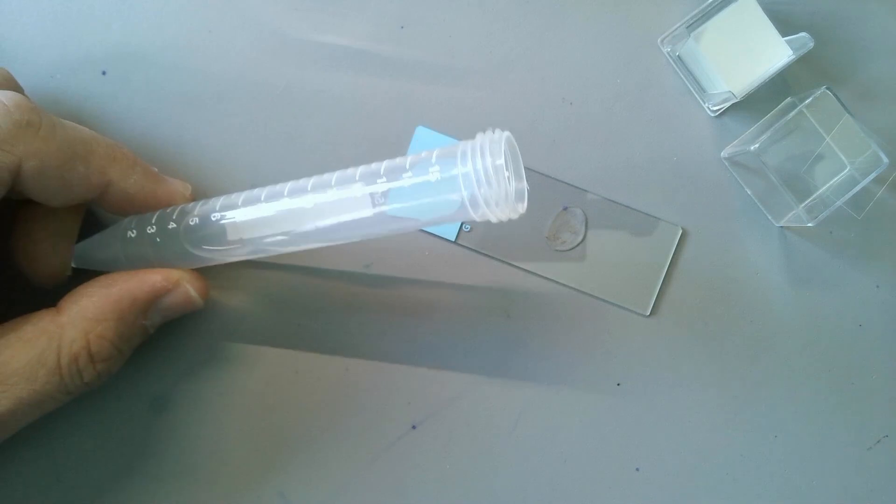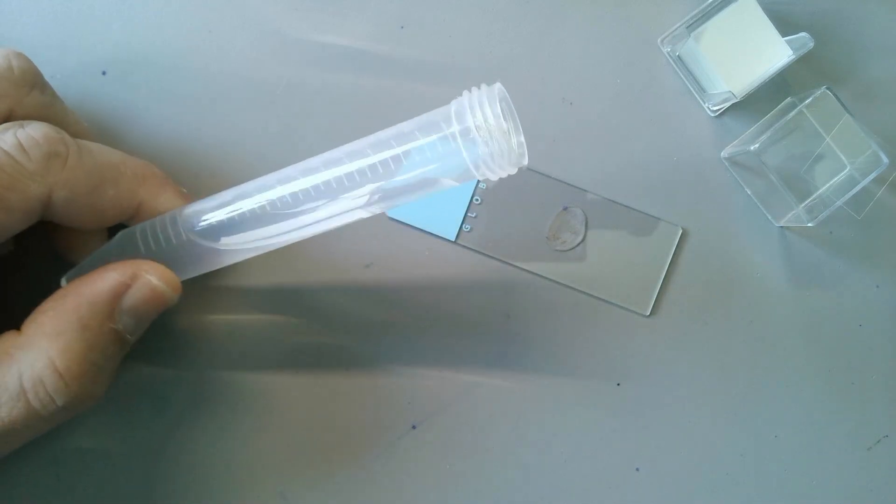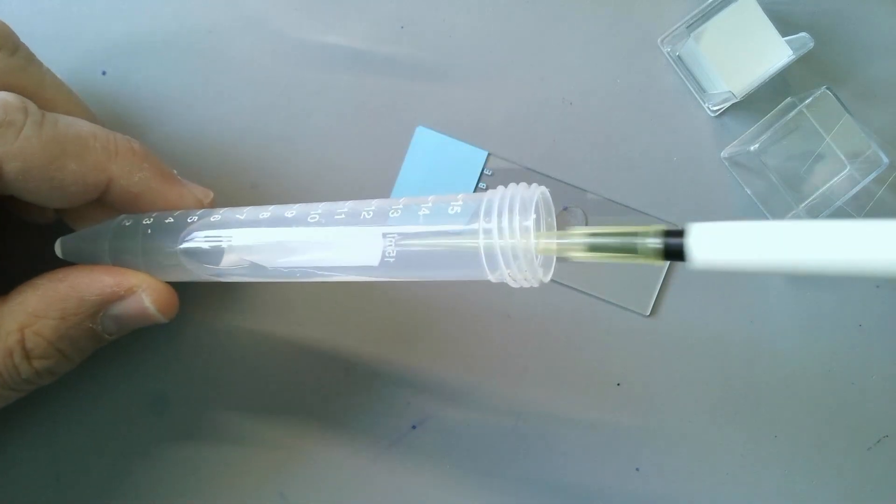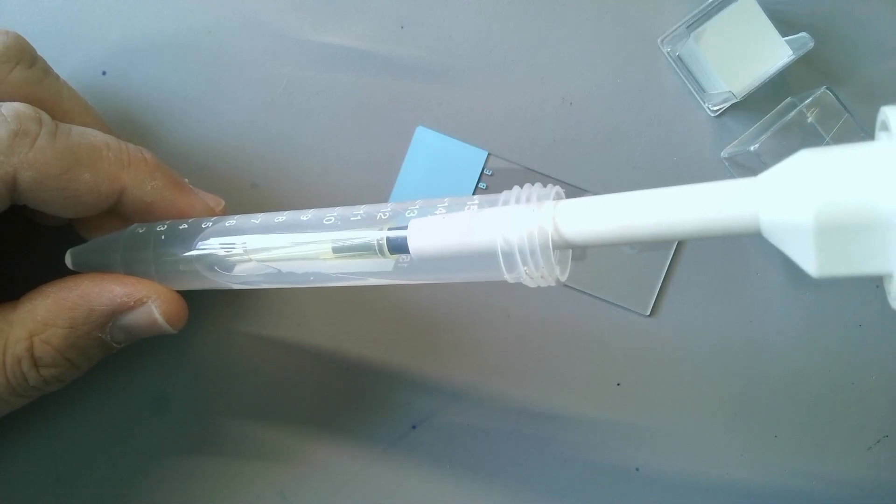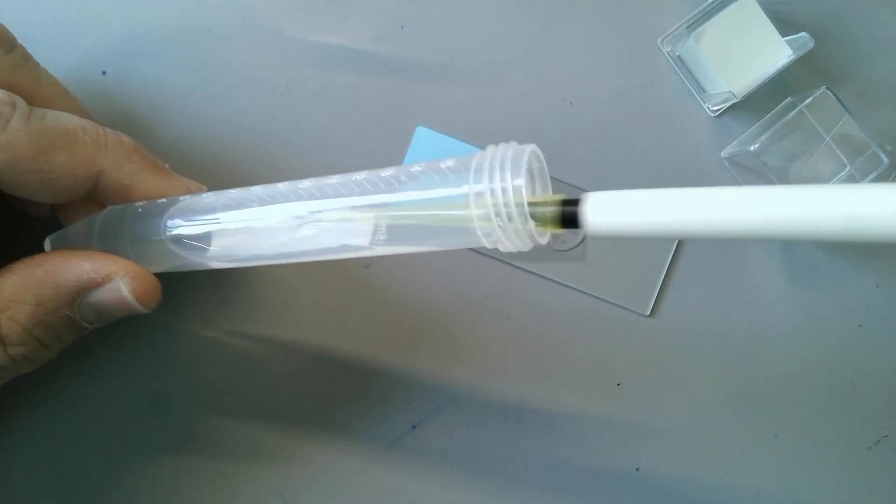Now, the second method is a little bit slightly more advanced. And that's also a method that I like to use quite frequently. And that is you add a substance that is very thick, very viscous. Like for example, in this case, methyl cellulose, which you can quite easily make yourself.